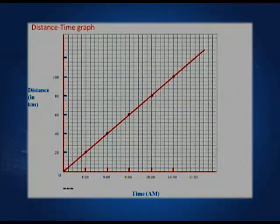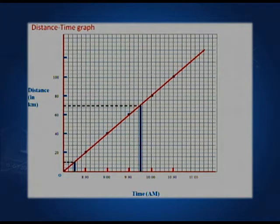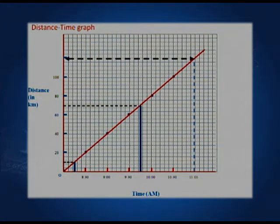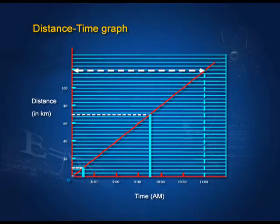What is the use of this graph? If we need to know when the bus had covered a distance of 10 kilometers, we can read the corresponding time from the graph. Similarly, we can find what time it was when the bus was 70 kilometers away. We can also extrapolate — we can find out where the bus would be at 11 o'clock, and we find it would be at about 120 kilometers. So the graph serves many purposes: it tells us the speed and where the bus was at a certain time.